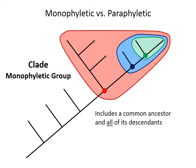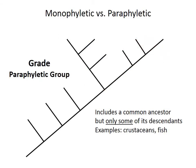This illustrates how more inclusive clades can nest within less inclusive clades, like Russian dolls. Monophyletic clades are the ideal classification approach. However, some traditionally recognized groups — like crustaceans or fish — are actually paraphyletic, because they include a common ancestor but only some of its descendants. For example, insects share a common ancestor with crustaceans, and we share a common ancestor with fish, yet insects are not considered crustaceans, and we are not considered fish. Paraphyletic groups are also called grades, as opposed to clades.